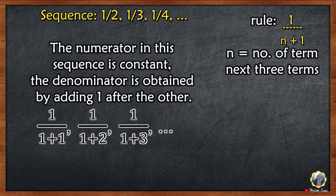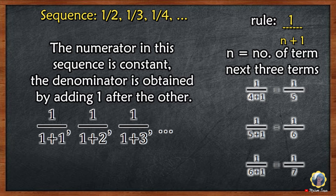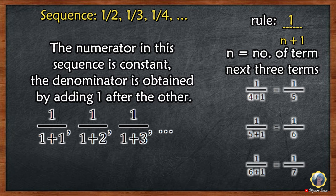To find the next 3 terms, change the value of n to 4, 5, and 6. 1 over (4+1) equals 1/5, 1 over (5+1) equals 1/6, 1 over (6+1) equals 1/7. So the next 3 terms are 1/5, 1/6, 1/7.